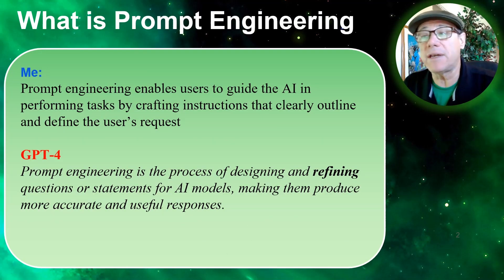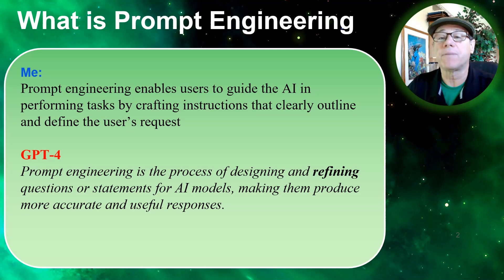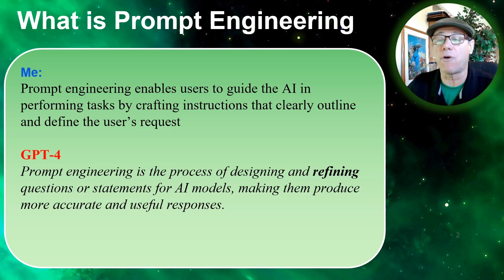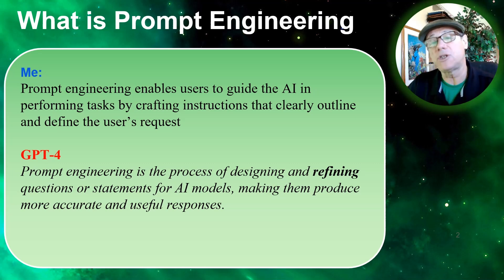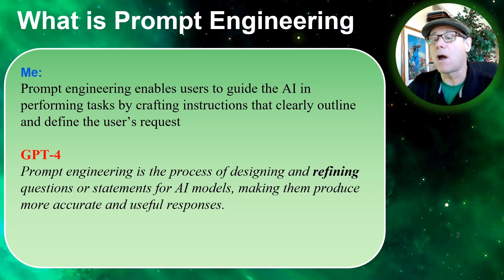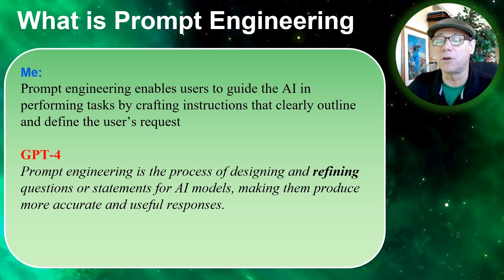Now let's start off by defining what prompt engineering is. For me I define prompt engineering like this: prompt engineering enables users to guide the AI in performing tasks by crafting instructions that clearly outline and define the user's request. I asked ChatGPT-4 what it thought. It came back with: prompt engineering is a process of designing and refining questions or statements for AI models, making them produce more accurate and useful responses. I like that word refining — we're going to come back to that.